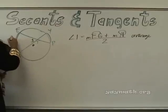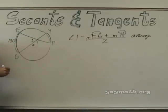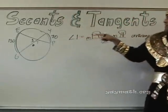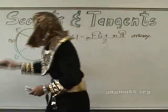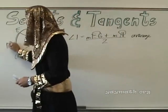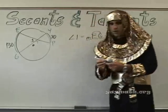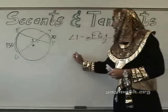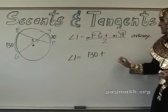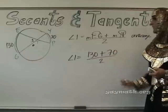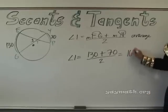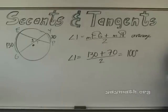Let's go ahead and do numbers to find what angle one is. We have 130 as the bigger arc and 70 as the smaller arc. Angle one equals 130 plus 70 over 2 — that's 200 over 2 — which is 100 degrees.